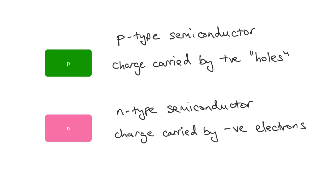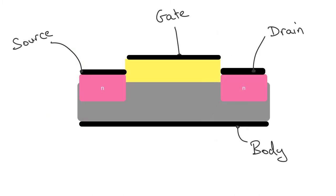Now I'm going to introduce the MOSFET. Here is my picture of a MOSFET. A MOSFET is a device that has four terminals: it's got a source, a gate, a drain, and a body. The source and the drain are made of doped semiconductor. In this case, this is an N-channel MOSFET, and it's N-type semiconductor at the source and the drain. So in this N-channel MOSFET, the charge carriers are going to be negatively charged electrons.